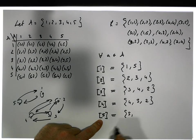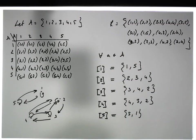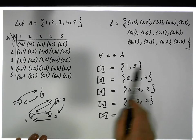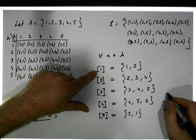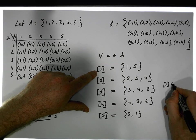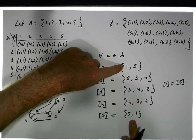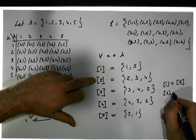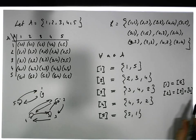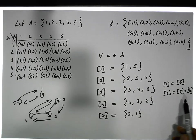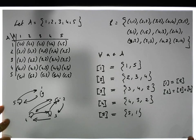What about five? Five is related to five, and five is related to one — that's really it for five. So we've constructed equivalence classes for each value. The equivalence class of 1 is the same as the equivalence class of 5 — they're the same class because they're the same set. The equivalence class of 2 is the same as the equivalence class of 3, which is the same as the equivalence class of 4. They're in each other's class.